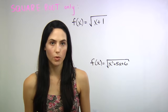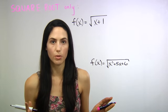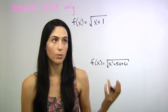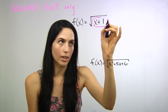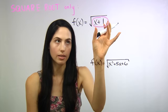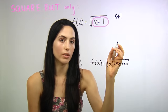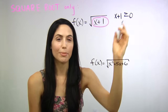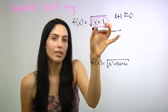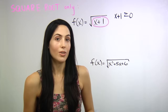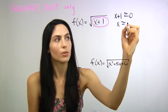Now let me show you what to do if you have just a square root in your function. I'm going to focus on a square root, but this is true for any even root — fourth root, sixth root, etc. It's not true for odd roots like the third root. If you have a square root or an even root, you take the expression underneath the radical sign — the radicand, everything under the root symbol, so in this case x plus one — and you need it to be greater than or equal to zero, because we can't have a negative number underneath a root.